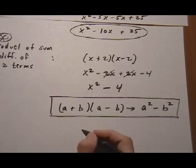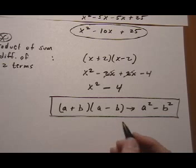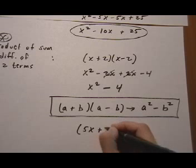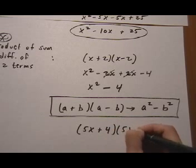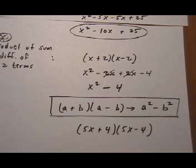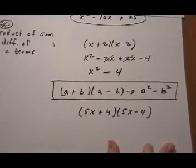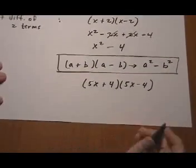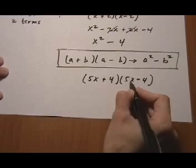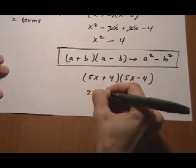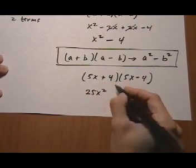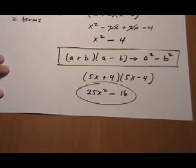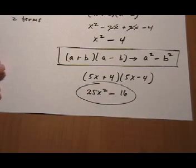The other reason is you can take any problem like (5x + 4)(5x - 4). I don't have to FOIL it out if I recognize I've got a sum and difference. I just take the first term and square it: (5x)² = 25x², then subtract the second term squared: 4² = 16. That's my answer—a really quick way.